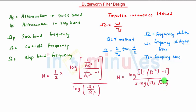Where delta S is attenuation in stop band. Now if the specifications are given in decibels there is another formula that is N is equal to half log of 10 raised to 0.1 AS in dB minus 1 upon 10 raised to 0.1 AP in dB minus 1 divided by log of omega S upon omega P.